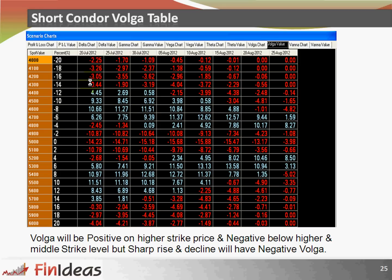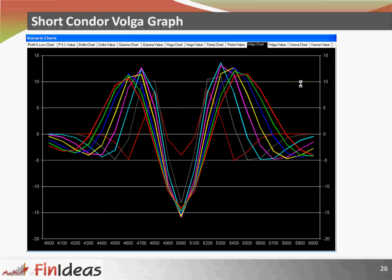Volga table for short condor: volga will be positive on a higher strike price and negative below the higher and middle strike levels. A surprise upside or decline will have a negative volga. We can see in the table that above 5200, our higher strike for calls, we are having positive volga, but below 5200 we are having negative volga. The volga graph also shows positive volga above 5200 and a slight negative volga below that.